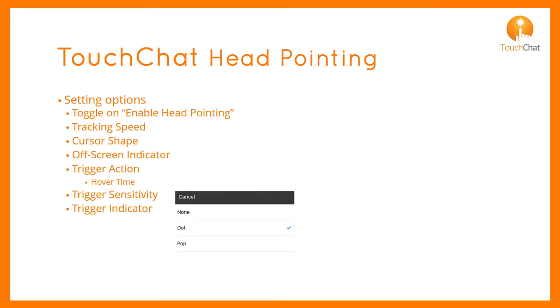The trigger indicator provides feedback when a button selection has been activated. You can select none, a dot, or a pop which looks like a small firework on activation.